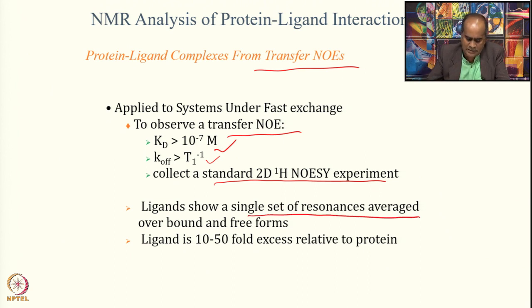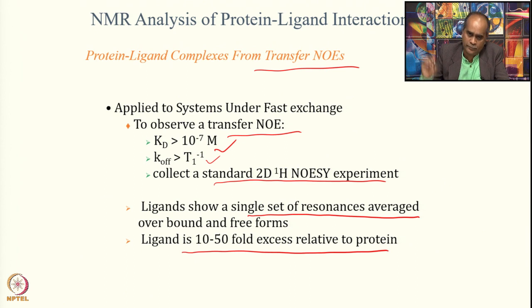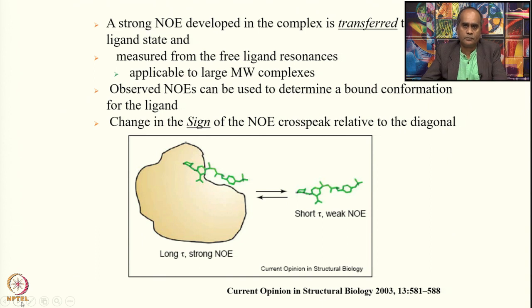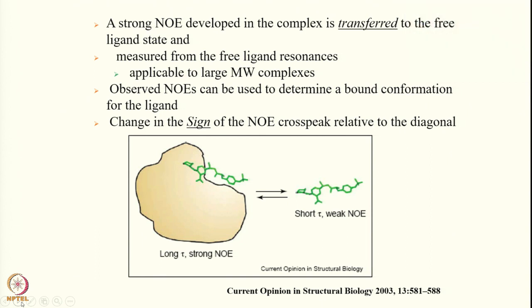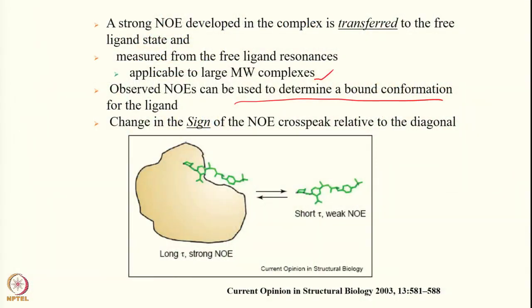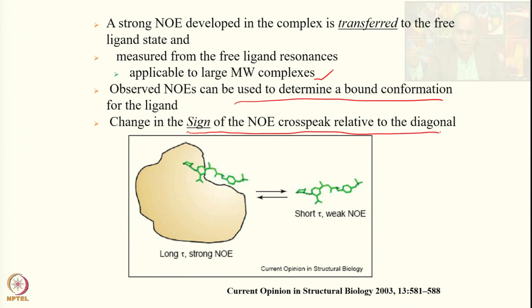We collect a standard 2D NOE experiment where ligand is added to the protein molecule, and if there is a transfer of signal from the protein, we can detect it. The ligand shows signal averaged over bound and free states. The ligand should be in excess relative to the protein. A strong NOE developed in the complex is transferred to the free ligand state, and one can measure the free ligand resonances. This is applicable even to high molecular weight systems of several kilodaltons. The observed NOE can be used to determine the bound conformation of the ligand, fixing the orientation of the ligand in the binding pocket.